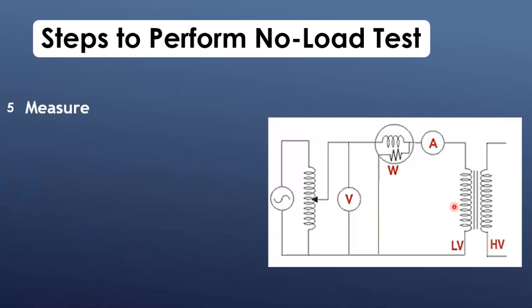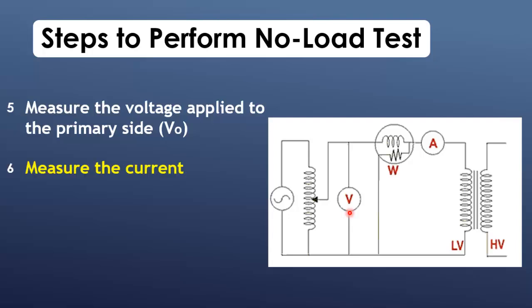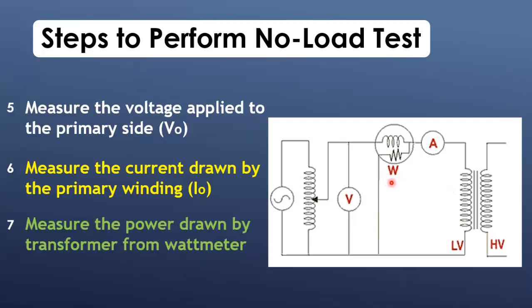Now after energizing the transformer at rated voltage, measure the voltage applied to the primary side V0. Note down the current drawn by the primary winding I0. Note down the power drawn by transformer using wattmeter.